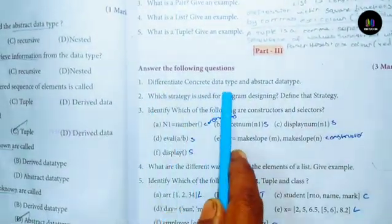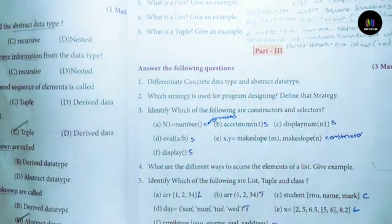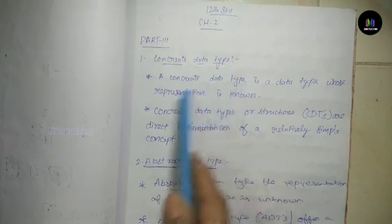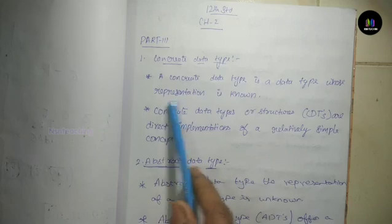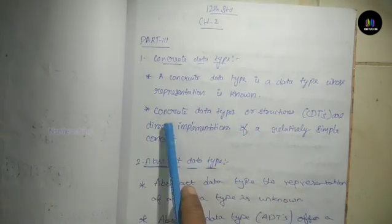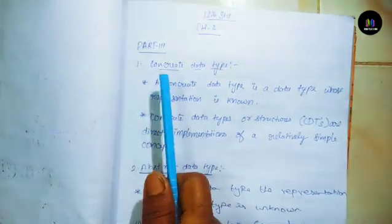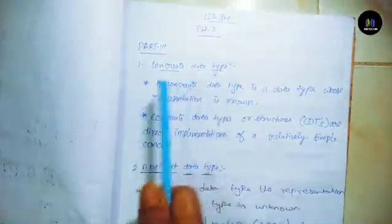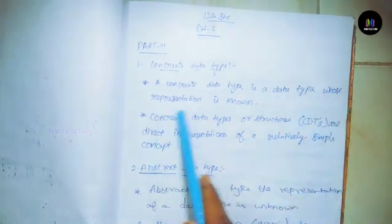Differentiate concrete data type and abstract data type. Concrete data type: First answer - A concrete data type is a data type whose representation is known.